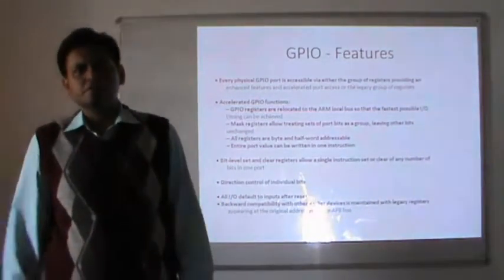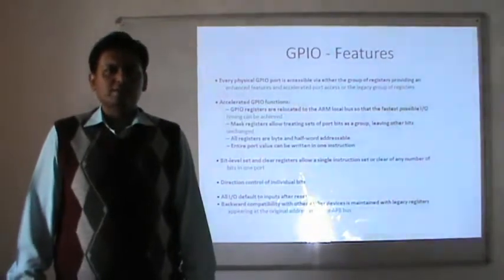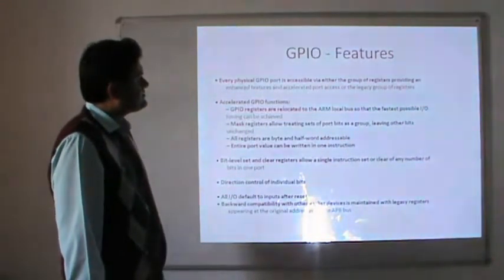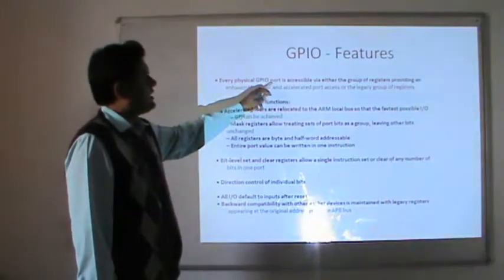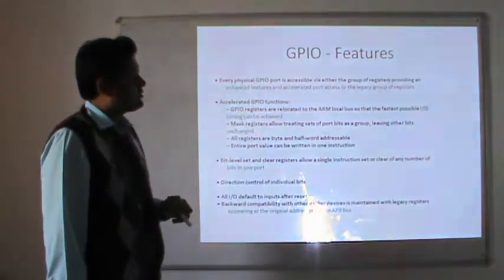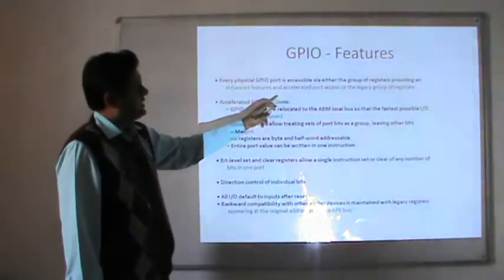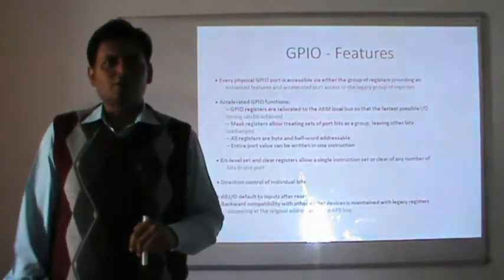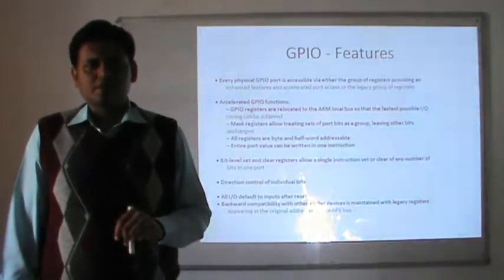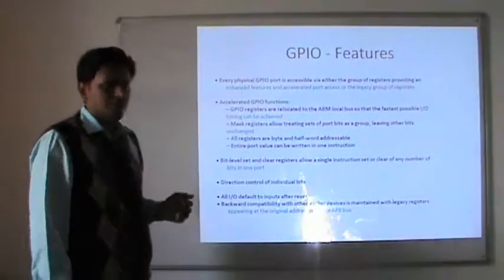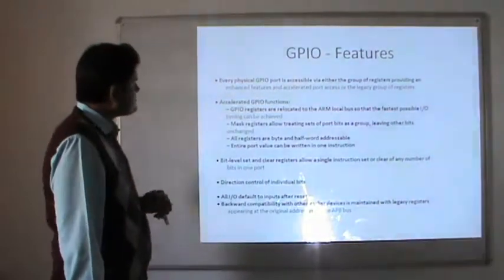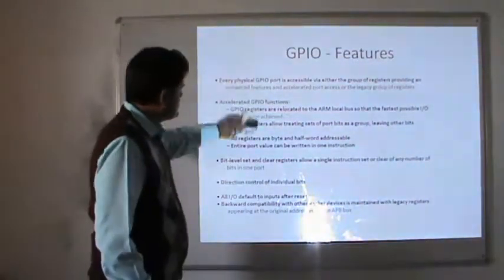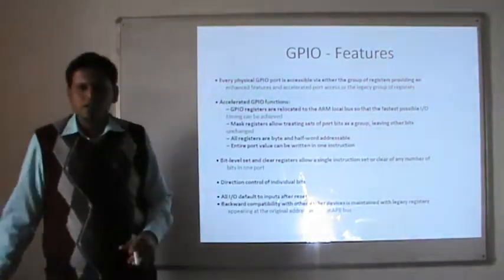Let us first go through the features of the general purpose input output devices for ARM7. Every physical GPIO port in ARM7 is accessible via either a group of registers providing an enhanced feature and accelerated port access, or the legacy group of registers. We have two types of ARM7 GPIO ports: slow ports and fast ports. For faster response we use the fast ports, and there are groups of registers used to configure the GPIO port.